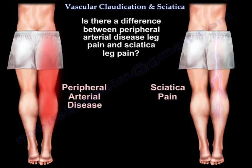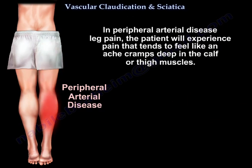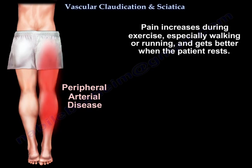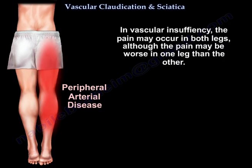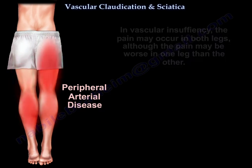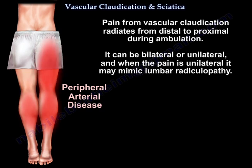Is there a difference between peripheral arterial disease leg pain and sciatica leg pain? In peripheral arterial disease, the patient will experience pain that tends to feel like an ache or cramps deep in the calf or thigh muscles. Pain increases during exercise, especially walking or running, and gets better when the patient rests. In vascular insufficiency, the pain may occur in both legs, although it may be worse in one leg than the other.